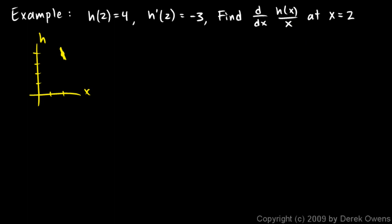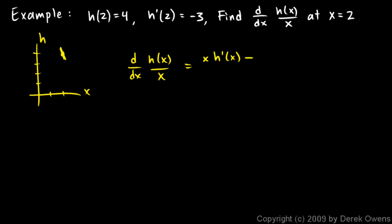Both of these are functions. h of x is a function, and x is a function. x is a very simple function, but both of them are functions, so I use the quotient rule. And I think of the quotient rule as low d high minus high d low over low low. So the derivative with respect to x of h of x over x is: low d high — low down here is x — and then the derivative of what's up top, that's h prime of x.